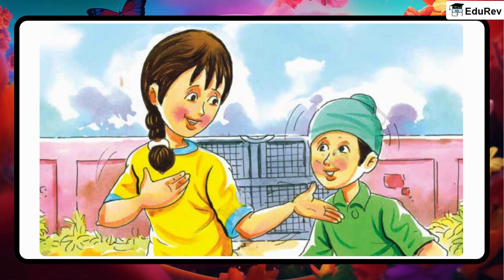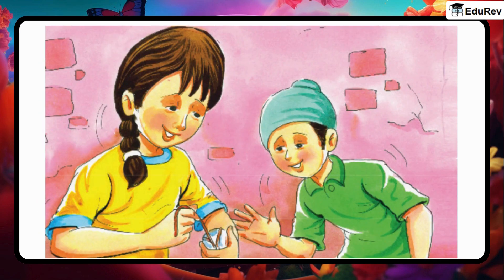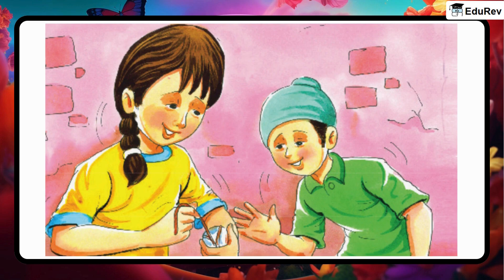Bubbly knew how to make a ball. They got a few rags, paper, and wool. Bubbly also bought a piece of string. She rolled rags, paper, and wool to make a ball. Then she tied the ball with a string.